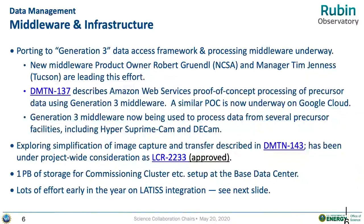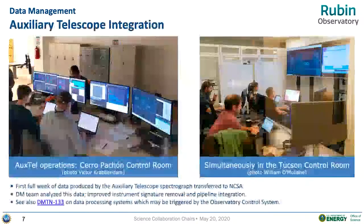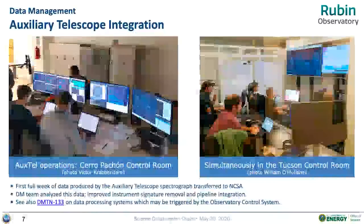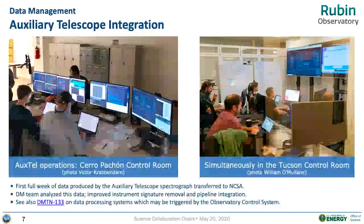Some of this infrastructure has been under early testing this past year with LATISS — the LSST Auxiliary Telescope Imaging Spectrograph System — though we'll have to come up with another name for that acronym.